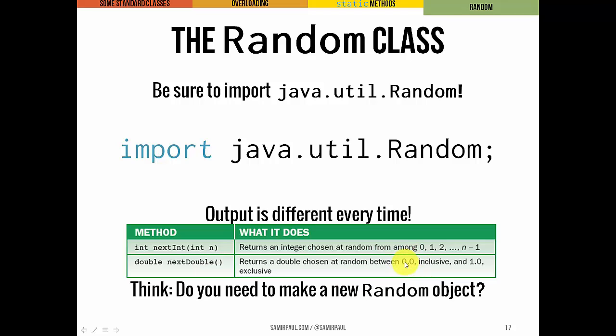Now 0.0 is inclusive, 1.0 is exclusive, so it can't actually return exactly 1. We don't have the static keyword here.